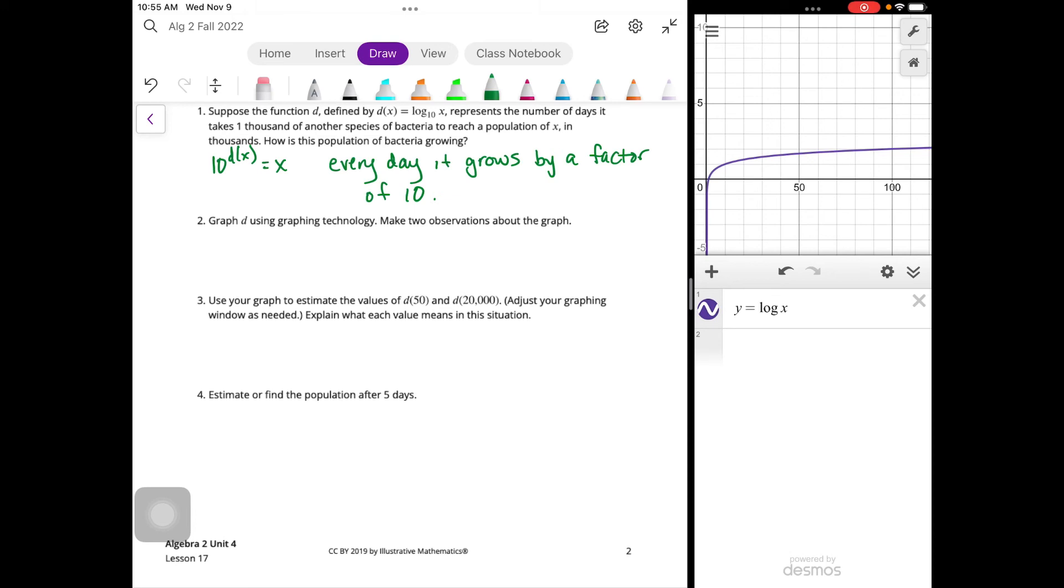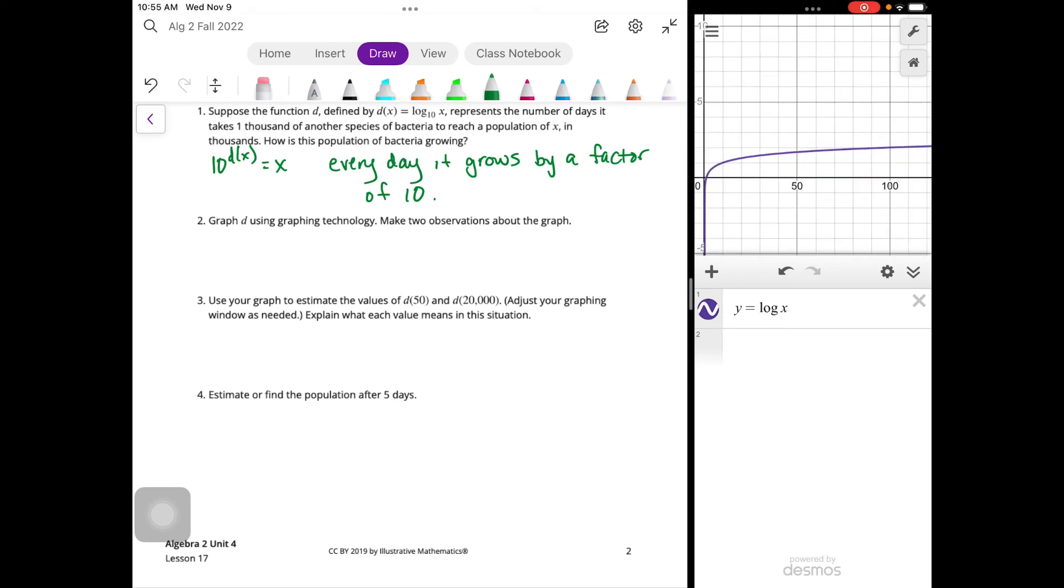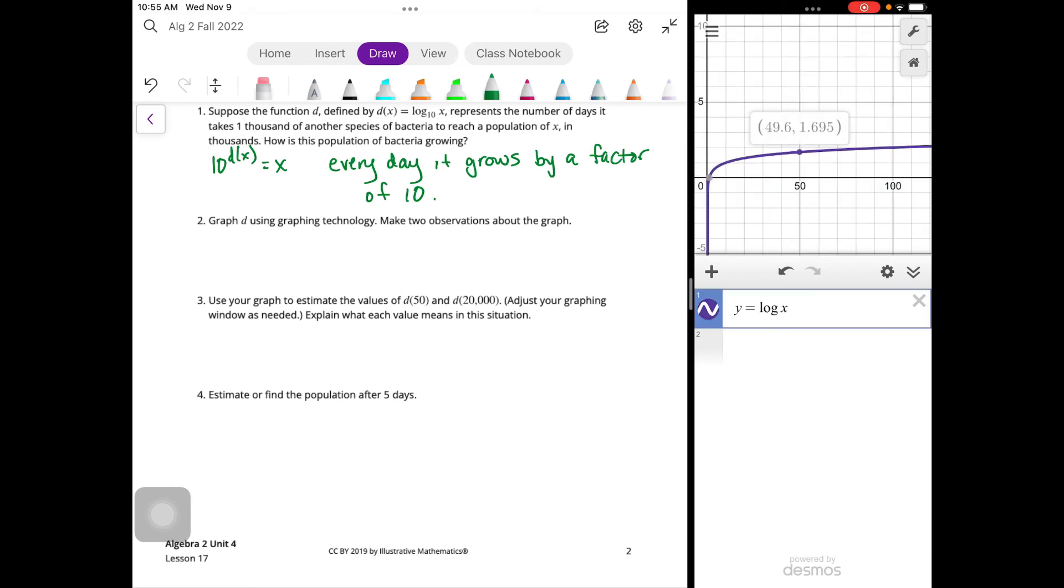All right. So we're going to use our graph to estimate values for d of 50. And right there, we've got 50. So 1.699. So d of 50 is about 1.699 or 1.7.